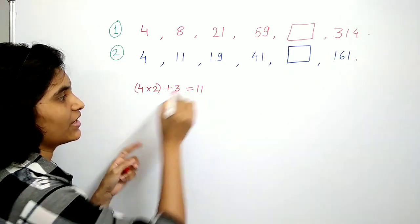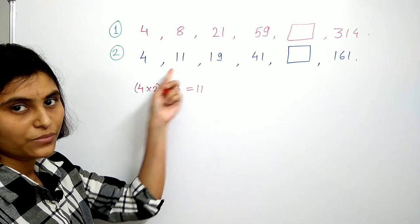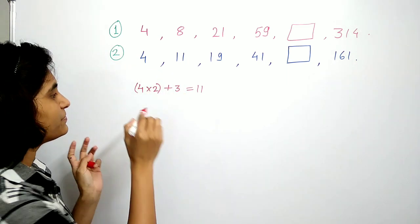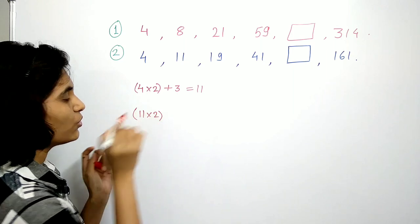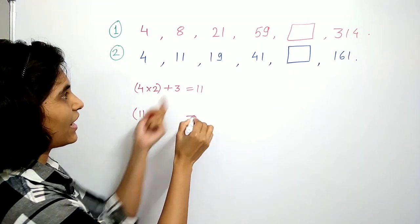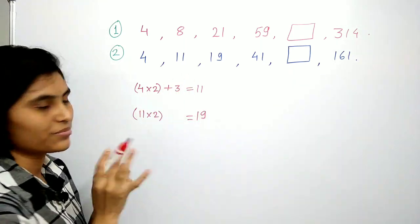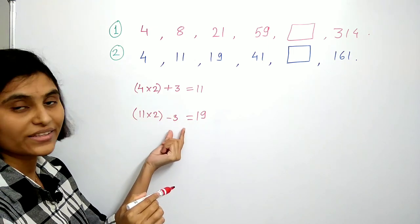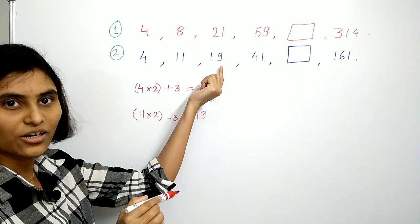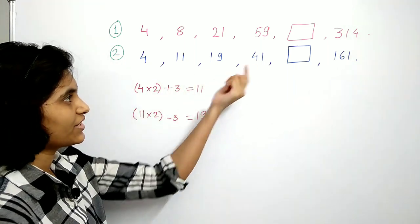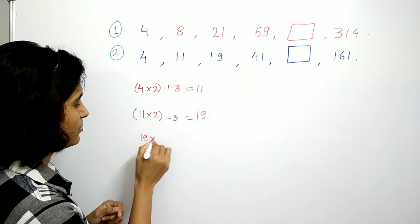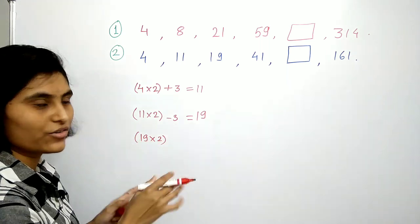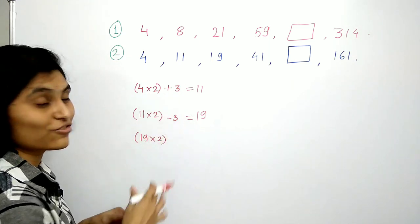This is the second number. Now take this 11, multiply it with 2, and to get 19 we have to subtract 3, so 22 minus 3 gives us 19, the third number. Now to generate this 41, take 19, multiply by 2. Now here we have plus 3, minus 3, so next must be plus 3.